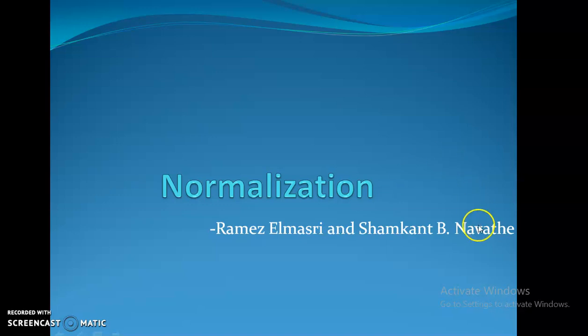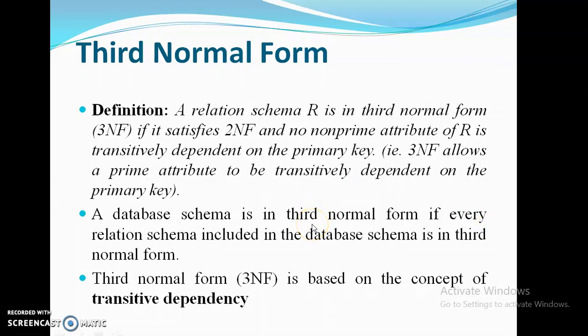Next is third normal form. If a relation schema R is in third normal form, it satisfies 2NF and no non-prime attribute of R is transitively dependent on the primary key. 3NF allows a prime attribute to be transitively dependent on the primary key, but it does not allow a non-prime attribute to be transitively dependent on the primary key.